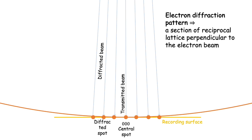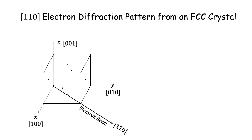The electron diffraction pattern is nothing but a section of the reciprocal lattice perpendicular to the electron beam. This is a very simple interpretation. Let us use this to predict an electron diffraction pattern from an FCC crystal with the beam traveling in the 110 direction.